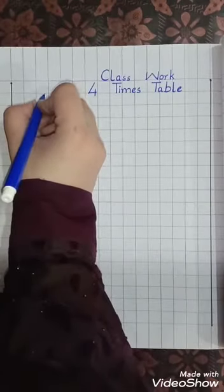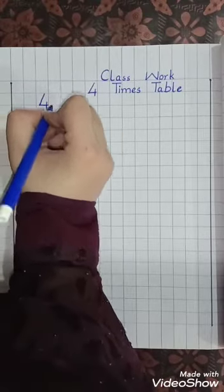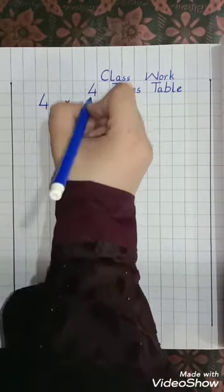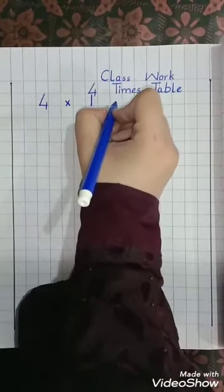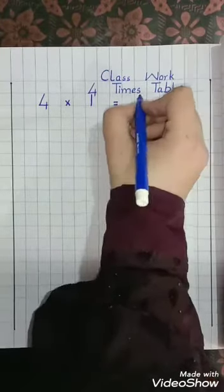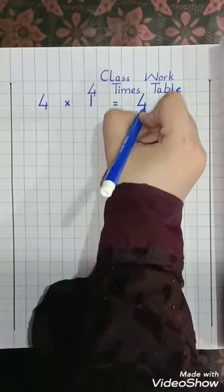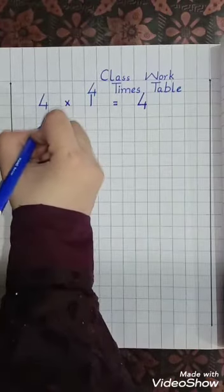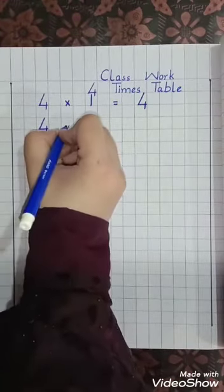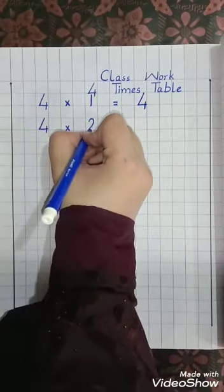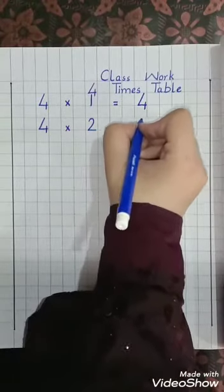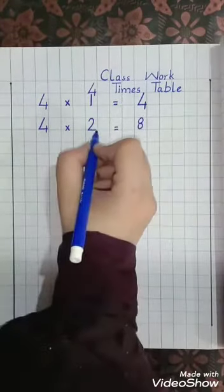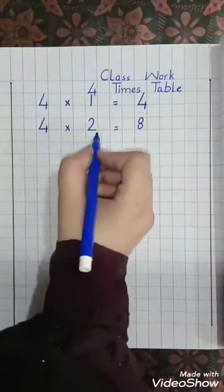Skip two blocks and write four. Skip one block. Sign, multiply. One block skip, one, one block skip, equal lines, skip one block and write four. Four ones are four. Four ones are four.